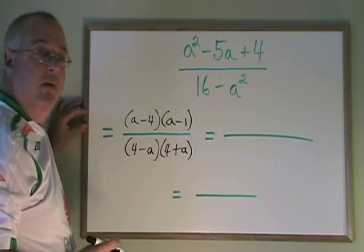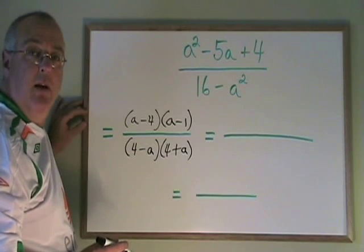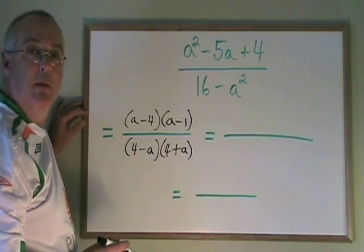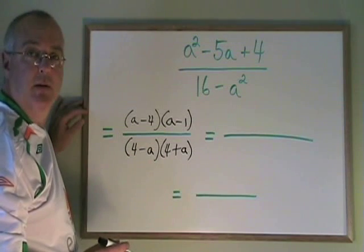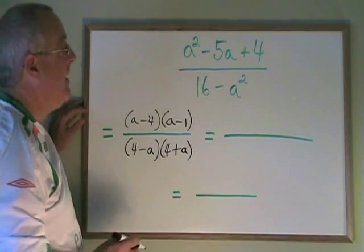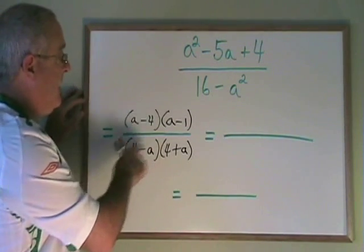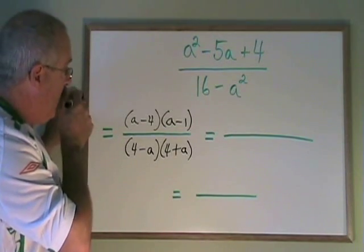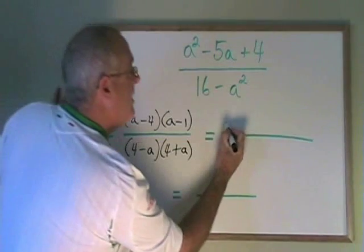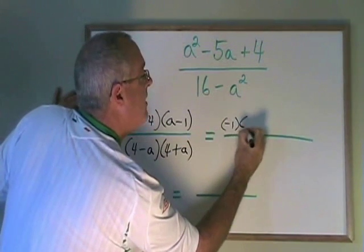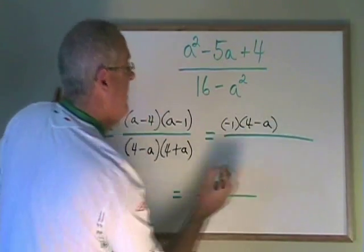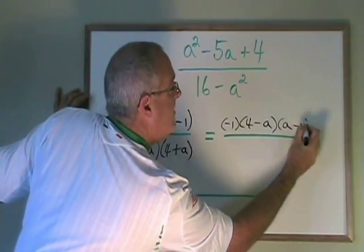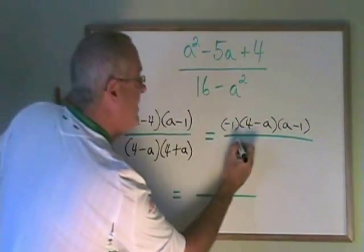If you don't remember either of these two factoring methods, they are the subject of my other videos: simple trinomial and difference of squares. We can't cancel anything here yet. We have to do the minus 1 trick. If I do the minus 1 trick to a minus 4, I get minus 1, 4 minus a. The a minus 1 remains the same, and the denominator remains the same.